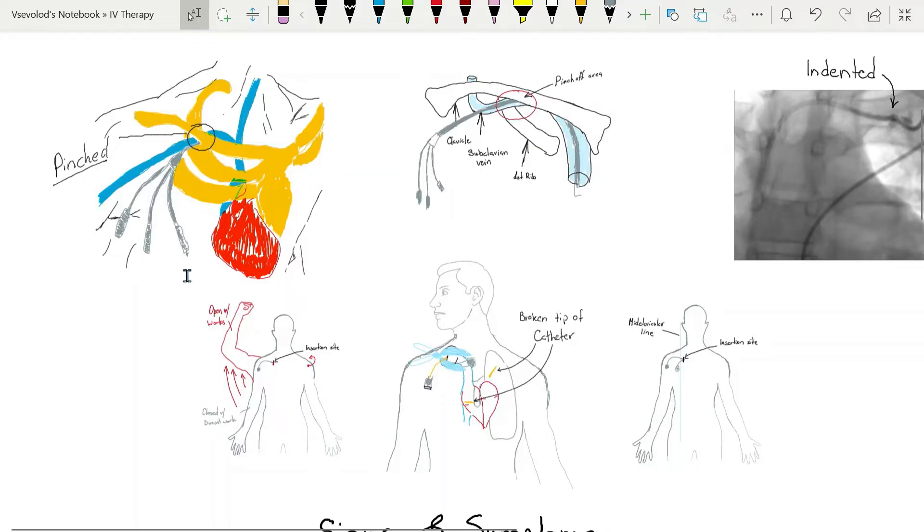Pinchoff syndrome is a significant and often unrecognized complication. It occurs when a central vascular access device enters the costoclavicular space medial to the subclavian vein and is positioned outside the lumen of the subclavian vein in the narrow area bound by clavicle, first rib, and costoclavicular ligament.